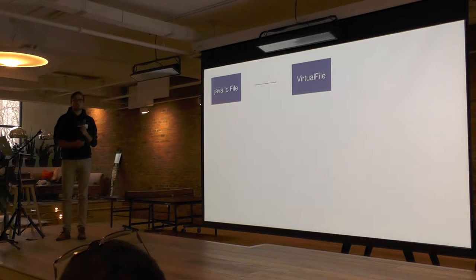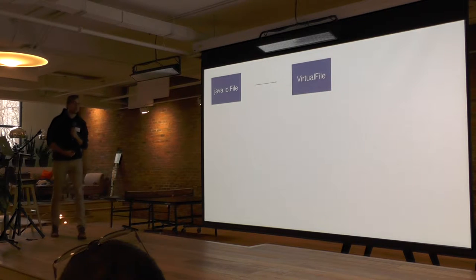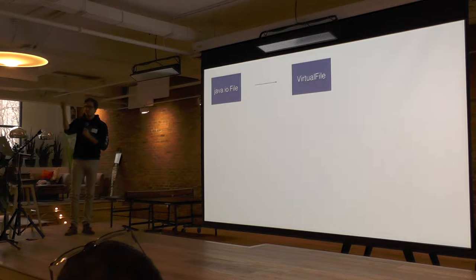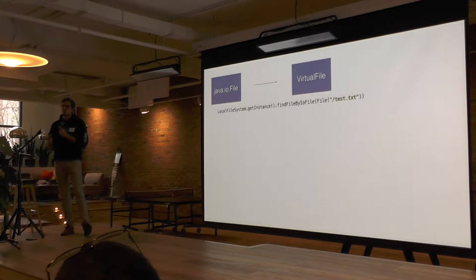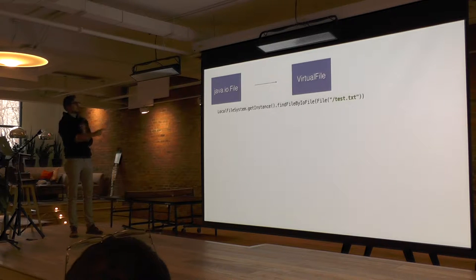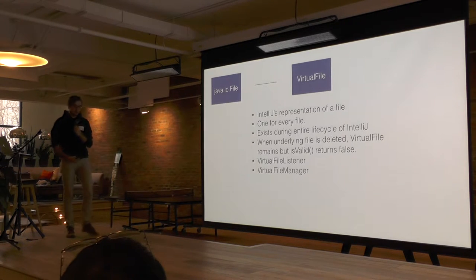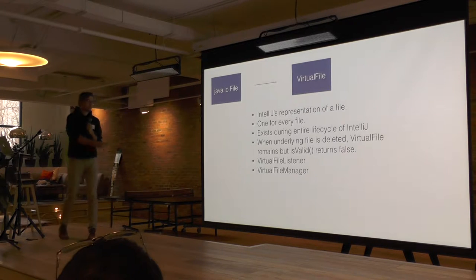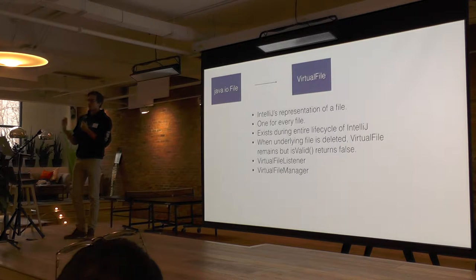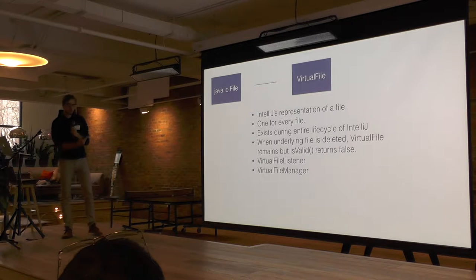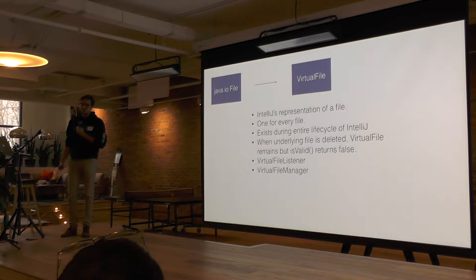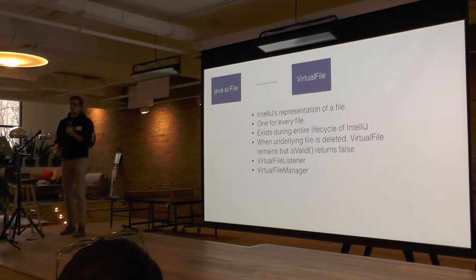The reason IntelliJ has a virtual file is that there are certain file callbacks you might want — like refactoring or when a file moves — that a Java IO file doesn't give you. A virtual file can. If you wanted to do it yourself, you can take a Java IO file and use the local file system instance to get the virtual file. There's one for every file, and it gives you lifecycle callbacks. An important one is isValid — when a file gets deleted, a virtual file persists as long as IntelliJ is open, so you need to check it's valid before doing operations on it.